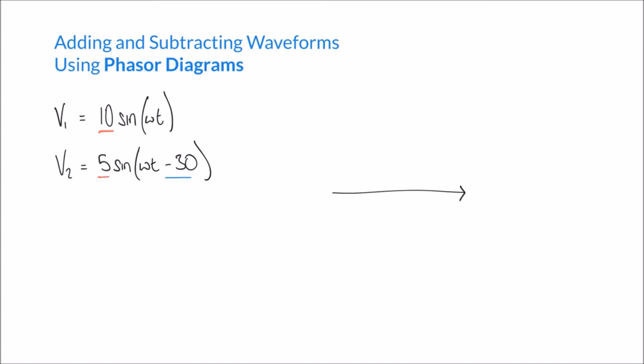If our waveform has a negative phase shift, the phasor should tilt downwards from the horizontal. Likewise, if our waveform has a positive phase shift, it should tilt upwards from the horizontal. Putting this into practice, we're now going to construct the phasor diagram to show V1 and V2.